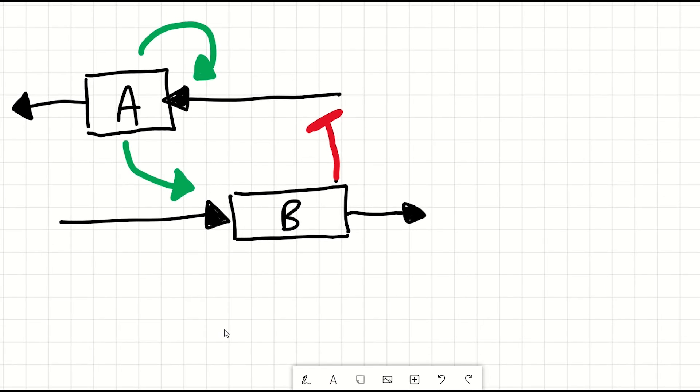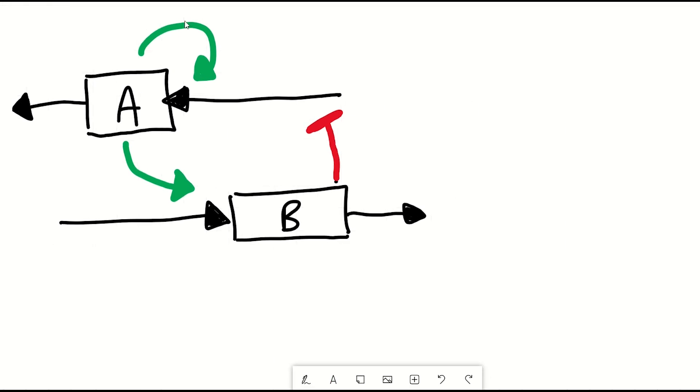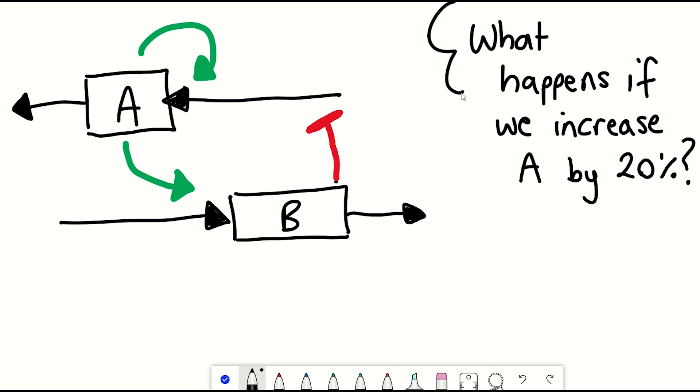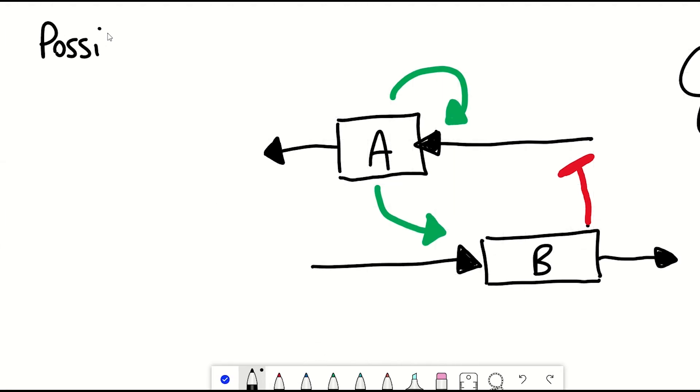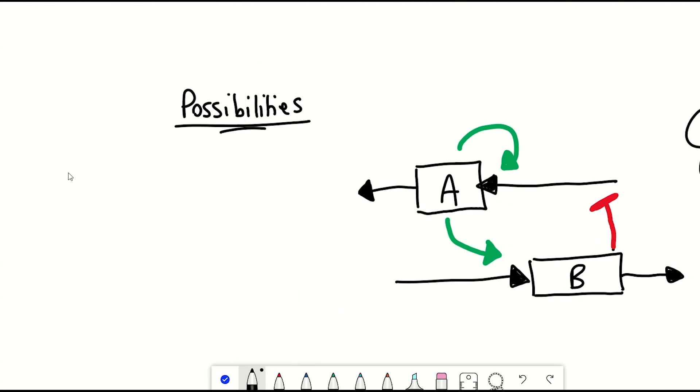So, if we begin with equal amounts of A and B, what would happen in this case if A is increased by 20%? Well, let's give some hypothetical examples. If we increase A, we might expect initially to see even higher amounts of A because A can activate itself. It self-reinforces.